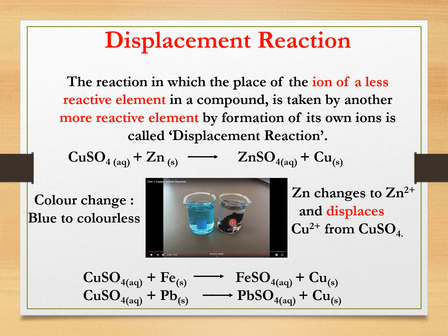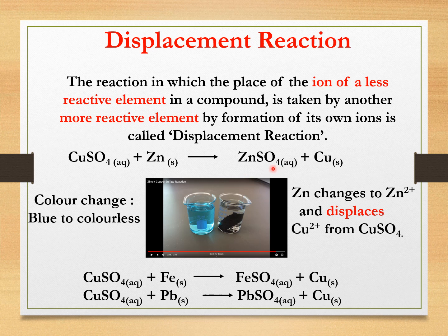Example: take copper sulfate solution in two beakers and in the second beaker, add a zinc plate. What you observe after some time is the color changes from blue to colorless. Why? Because zinc from the zinc plate changes to Zn²⁺ ions and displaces Cu²⁺, that is copper ion, from copper sulfate, and what is formed is ZnSO₄, that is zinc sulfate. That is why the color becomes colorless.